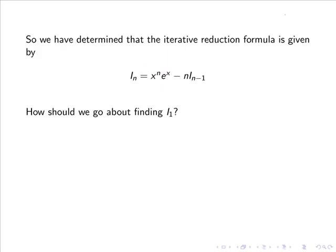So now how should we go about finding i₁? From the formula we can see that i₁ equals x¹eˣ minus 1 multiplied by i₀. However we do not know what i₀ is, and hence we must determine the base case i₀.